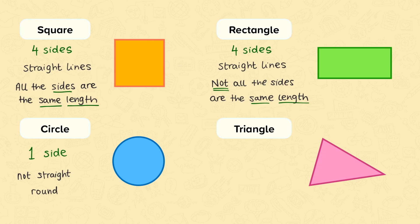And finally, we have the triangle. This shape has three sides, and all of those sides are straight lines. Make sure you can spell each of these words: square, rectangle, circle, and triangle.